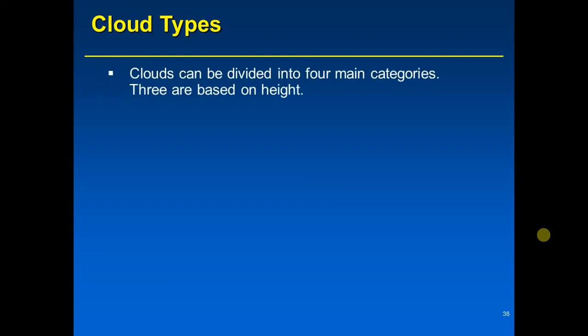Clouds can be divided into four major categories, and three are based on height. High clouds have the Latin prefix 'cirr-' — cloud names are Latin, as people used to learn Latin back in the day. High clouds begin with the Latin prefix 'cirr-', and middle clouds begin with the Latin prefix 'alto-'.